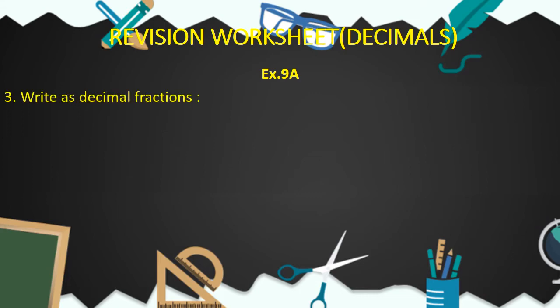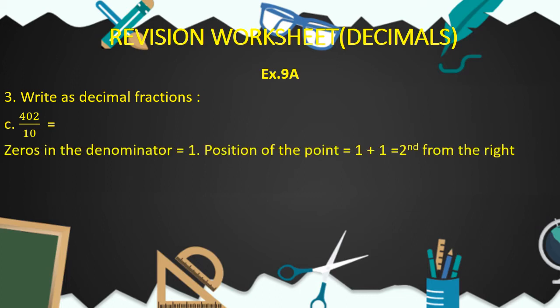Now children, let's come to question number 3: write as decimal fractions. Let's do part C. The common fraction is given and we have to write it as a decimal fraction. The denominator is 10, so the number of zeros in the denominator is equal to 1. Therefore, the position of the decimal point is equal to 1 plus 1, that is second from the right side. Our decimal fraction is 40.2, and you can see that the position of the decimal point is second from the right hand side.